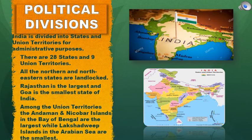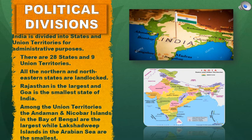India is divided into states and union territories for administrative purposes. There are 28 states and 9 union territories. All the northern and north-eastern states are landlocked. Rajasthan is the largest and Goa is the smallest state of India. Among the union territories, the Andaman and Nicobar Islands in the Bay of Bengal are the largest, while Lakshadweep Islands in the Arabian Sea are the smallest. Delhi is the national capital.